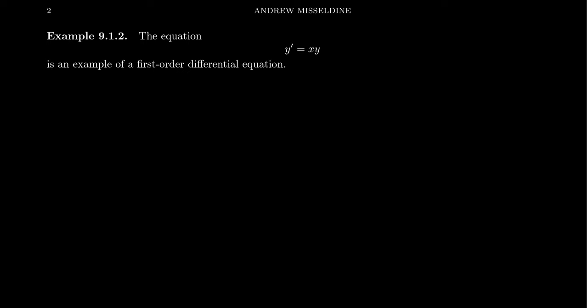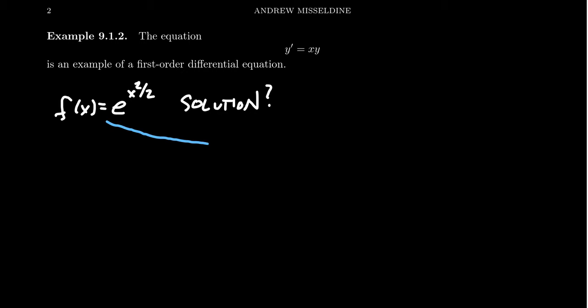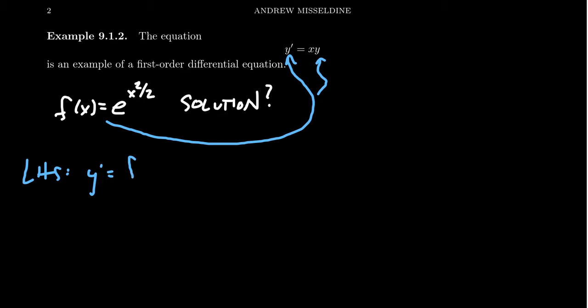In this video, we're not going to really talk about how one finds a solution of a differential equation. I mostly just want to convince you of what it means to be a solution. So what we're going to do is take as our candidate F of x equals e to the x squared over 2 power. I claim this is a solution to the differential equation. When it comes to an equation, you want to take your variable assignment and plug it into the left side and the right-hand side of the equation. On the left-hand side, we want to take the derivative of our substitution Y.